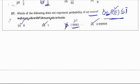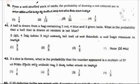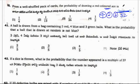From a well-shuffled pack of cards, the probability of drawing a red colored ace is? A deck of cards has 52 cards. There are 4 ace cards in a deck, 2 are red and 2 are black. So the answer is 2/52 which is 1/26. The correct option is option 3, 1/26.